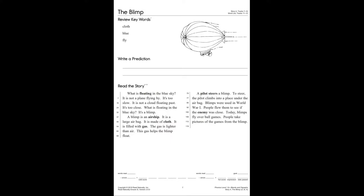Now, parents and children, if you can grab a piece of paper, your writing utensil, and let's get to our cozy little spots so we can get started. The title of this passage is The Blimp. Some of the key words to review are cloth, blue, and fly. And what I would like for you to do is on your piece of paper, just write down the first thing that comes to mind when you hear these words.